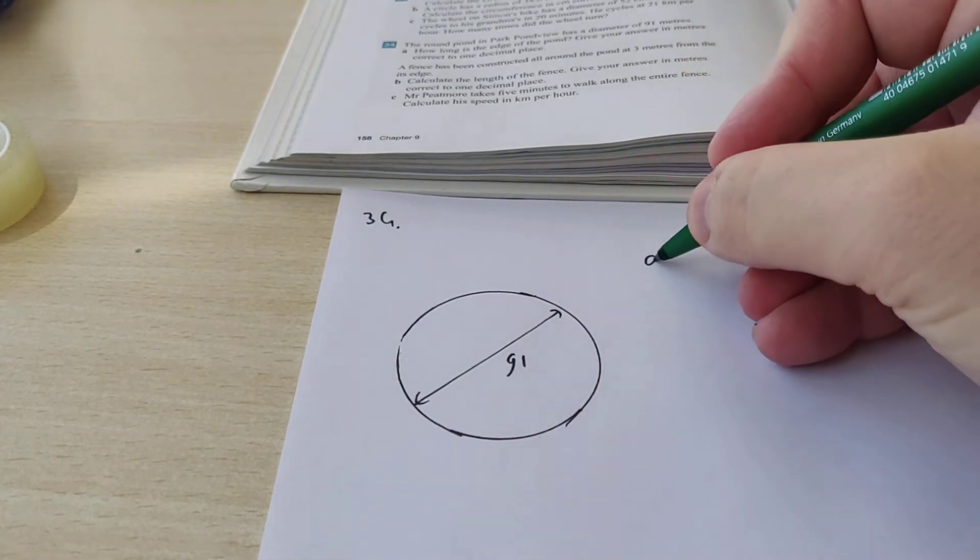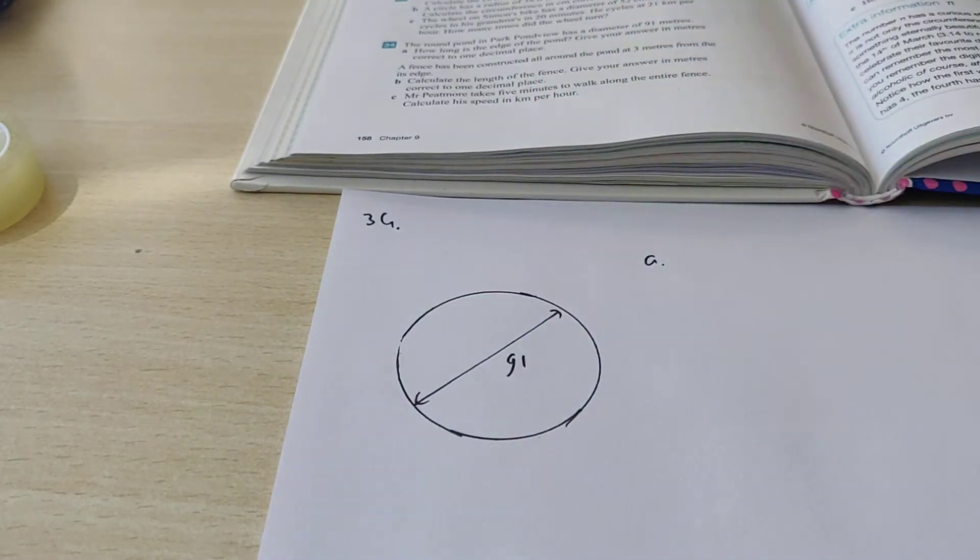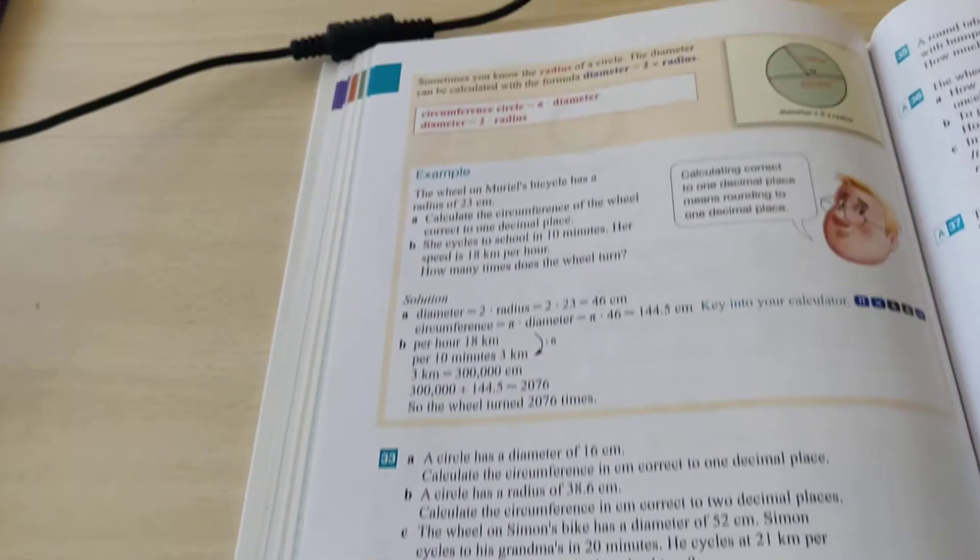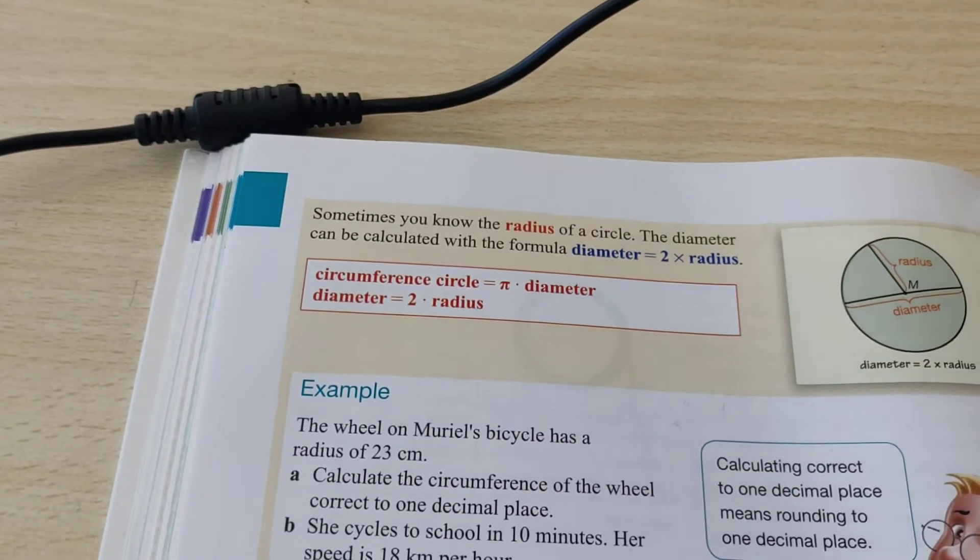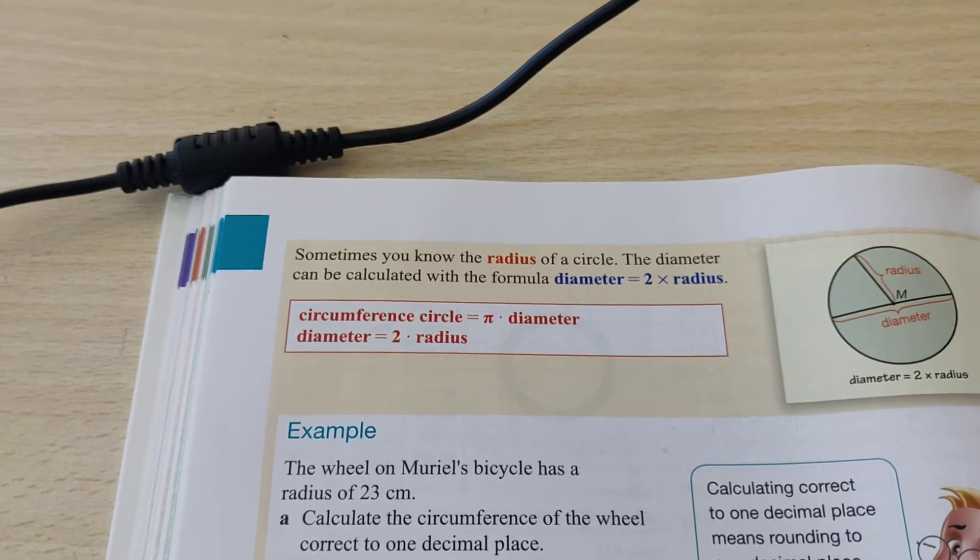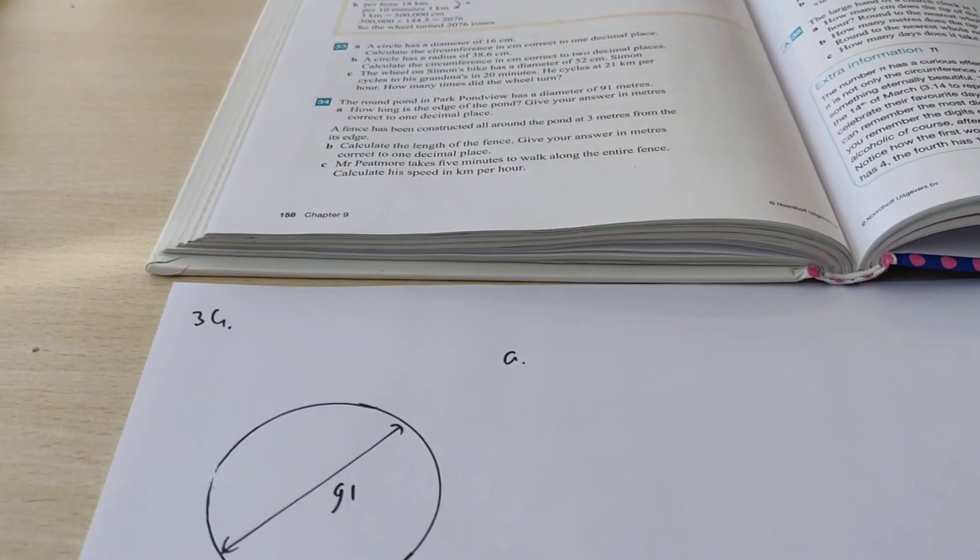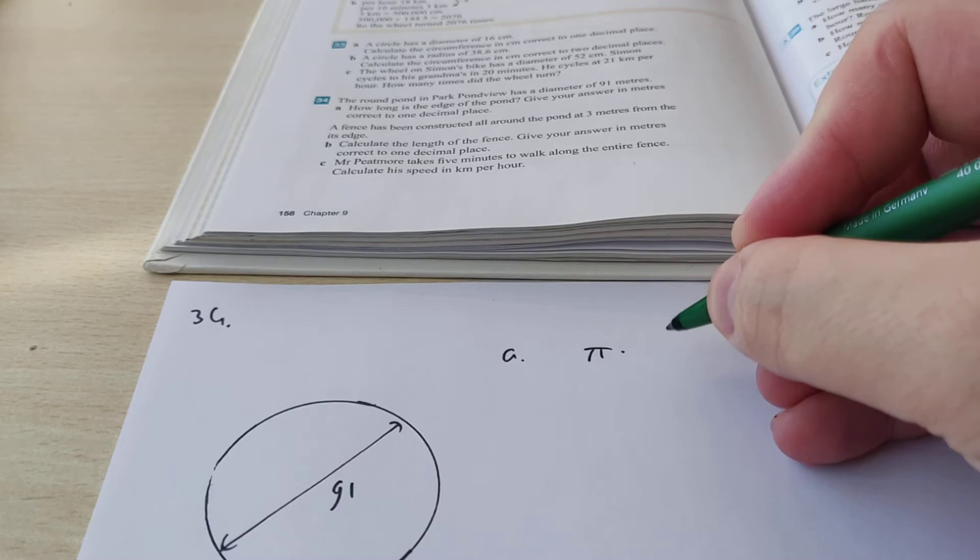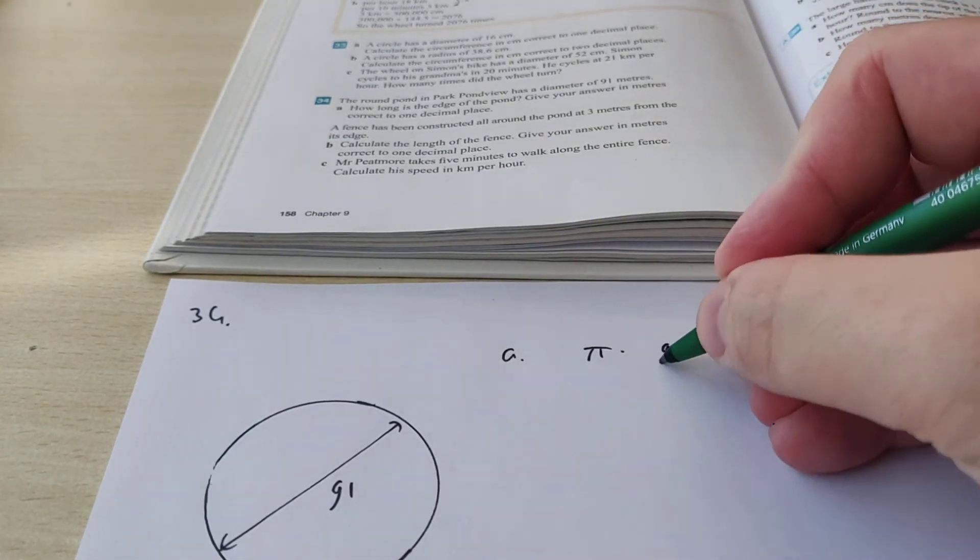Question A is about the circumference, which is when you go around. If you take a look at the formula in red, the circumference of a circle is π times the diameter. To calculate exercise A, we need to do π times the diameter, which is 91.